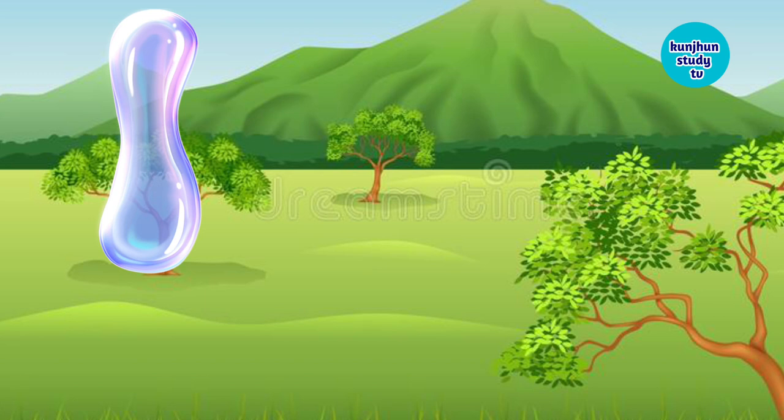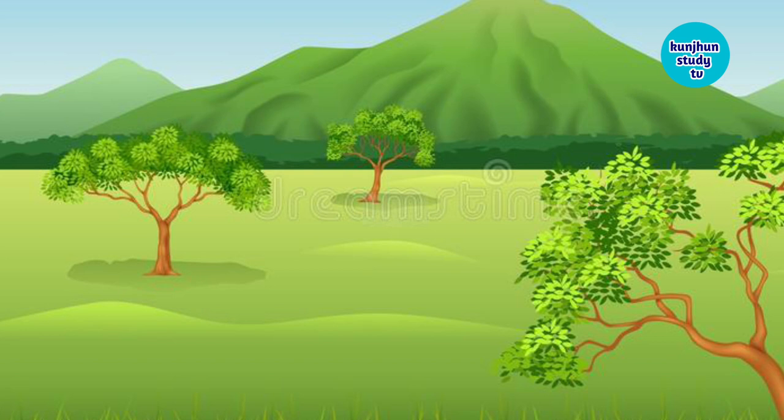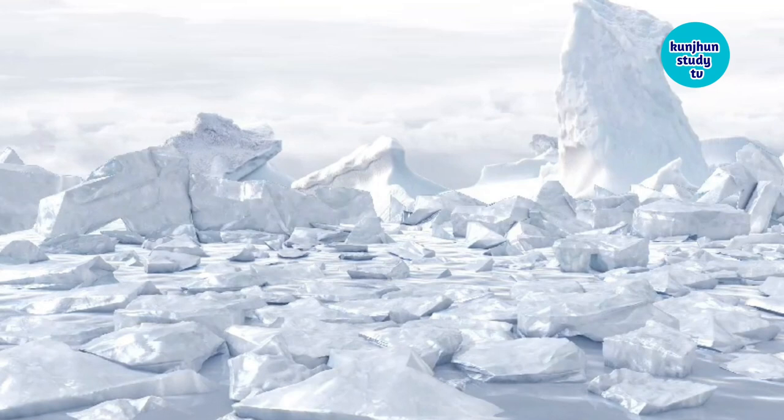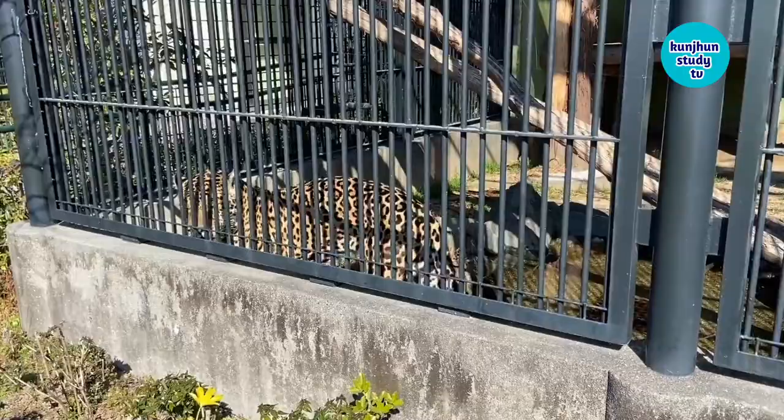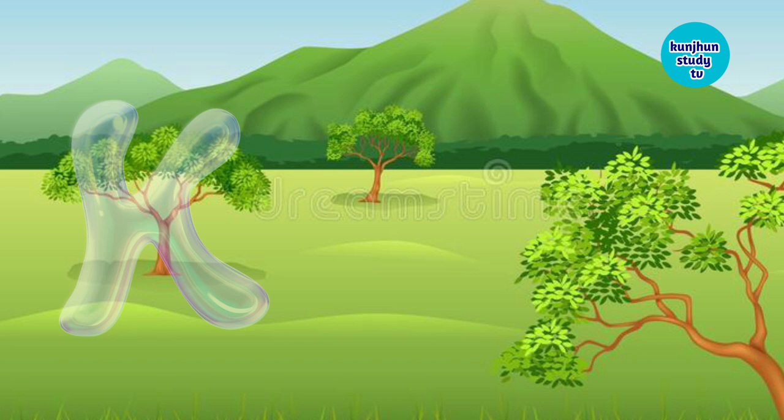I for ice. Ice means barf. J for jaguar. Jaguar means tendua. K. K for kite. Kite means patang.